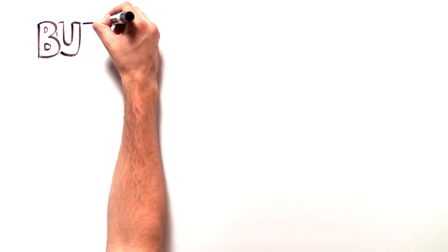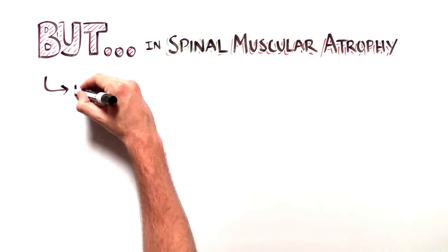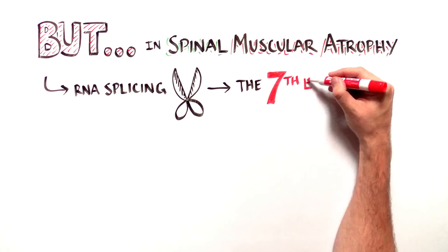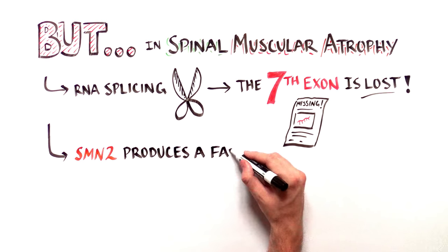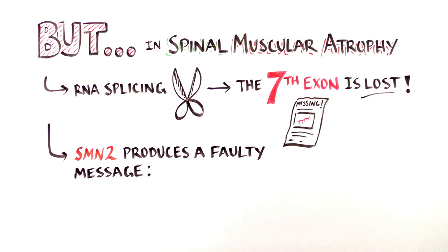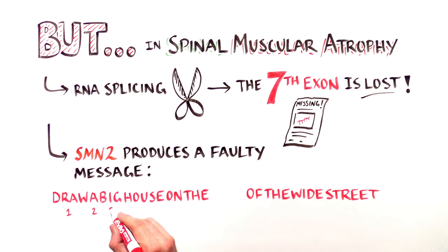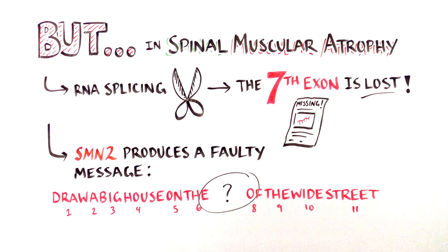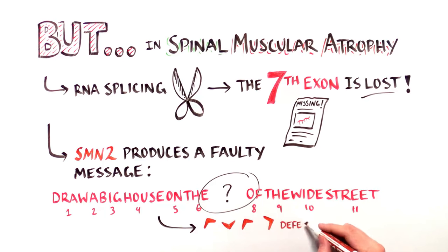In SMA, it turns out that during RNA splicing, the seventh exon of SMN2 is skipped by the machinery that edits RNA. Skipping of exon 7 generates a faulty message: draw a big house on the, of the wide street. Just like removing word number 7 in the sentence leads to a statement that makes no sense, removing exon 7 in the RNA results in a defective protein.